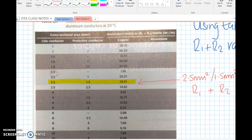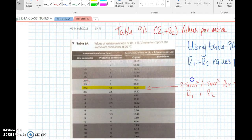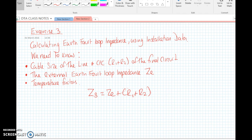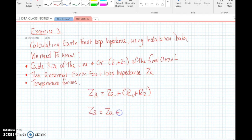For a 2.5 millimeter cable on its own, it has a resistance per meter of 7.41 milliohms at 20 degrees C. But what happens if our installation isn't running at 20 degrees C, or our circuits are loaded up? Normally the conductors can operate up to 70 degrees C, so we can add some temperature factors.